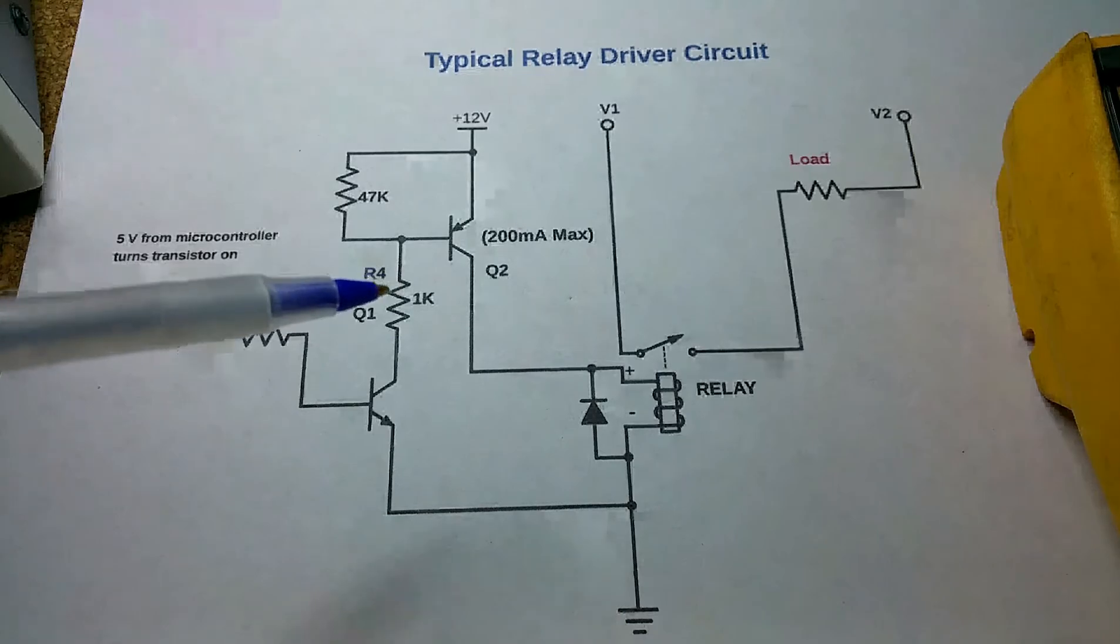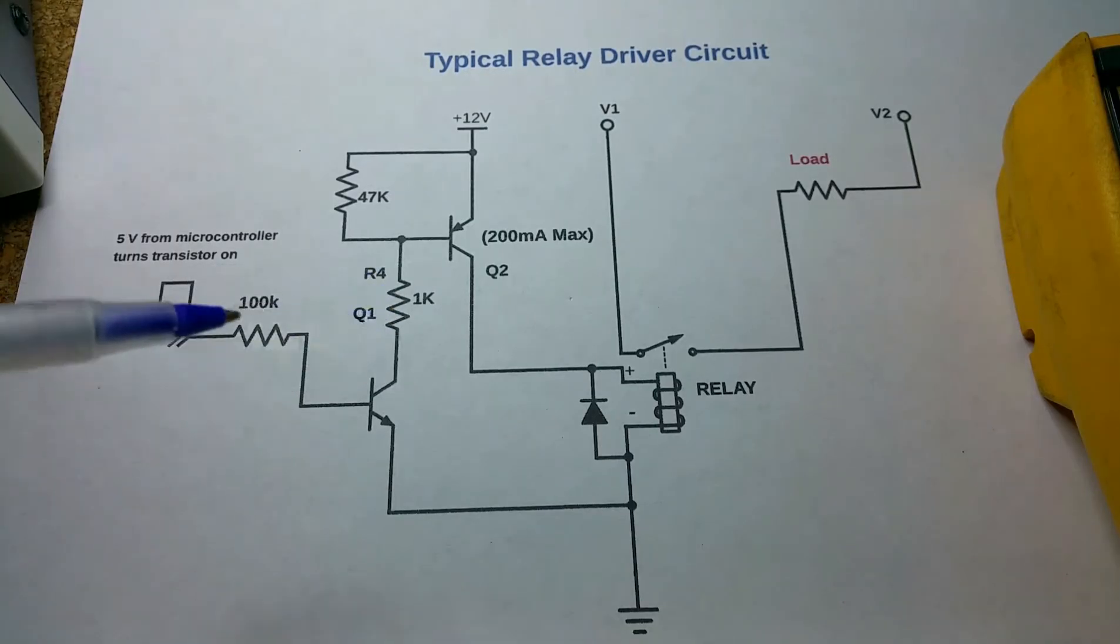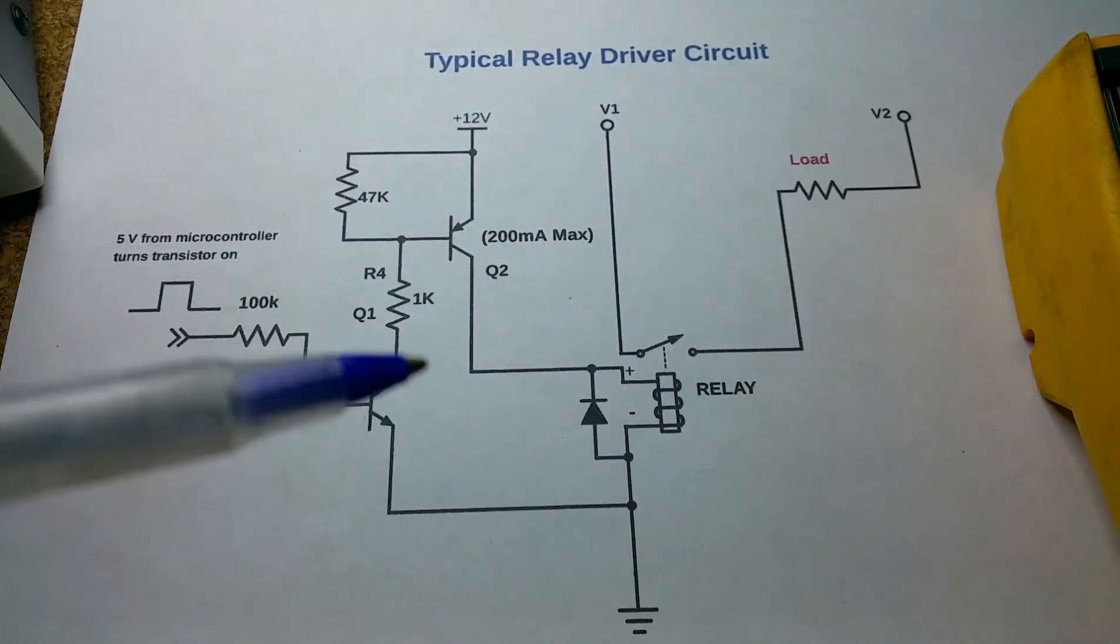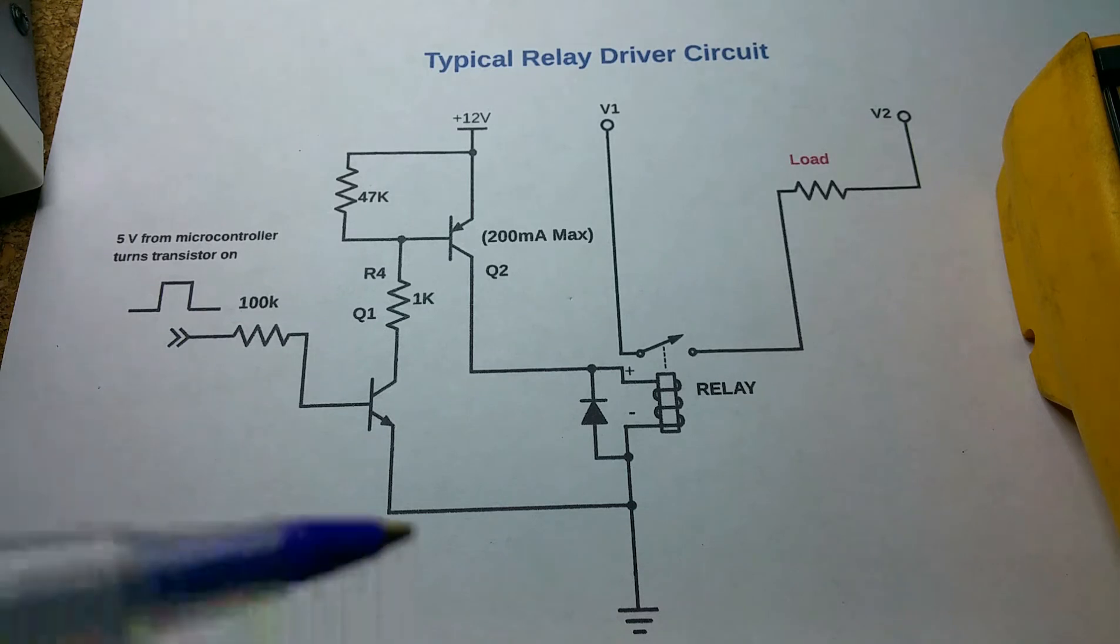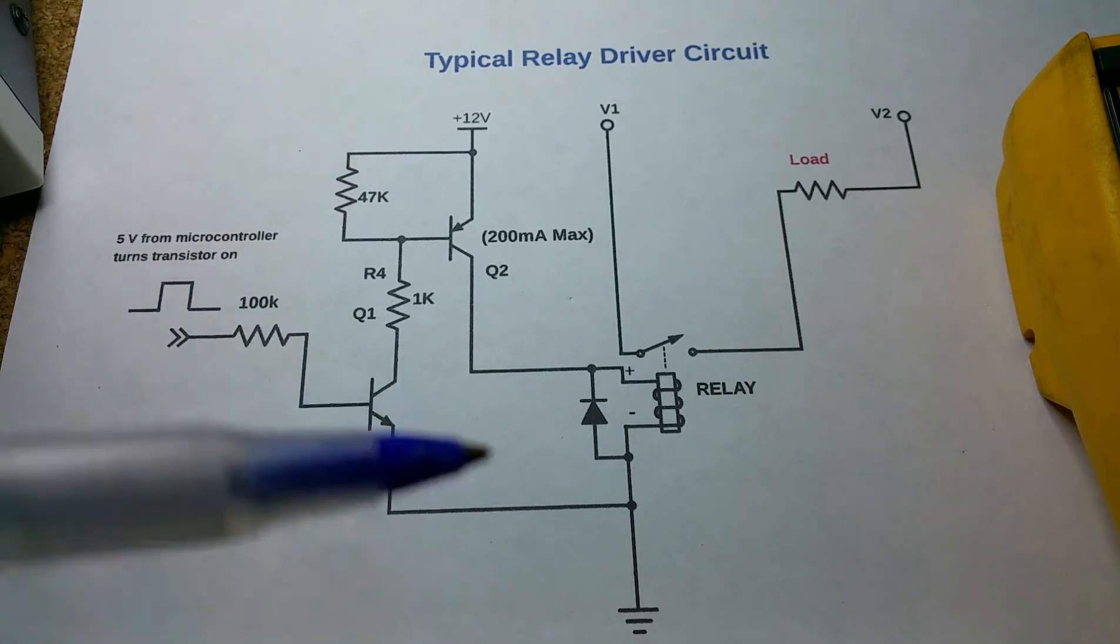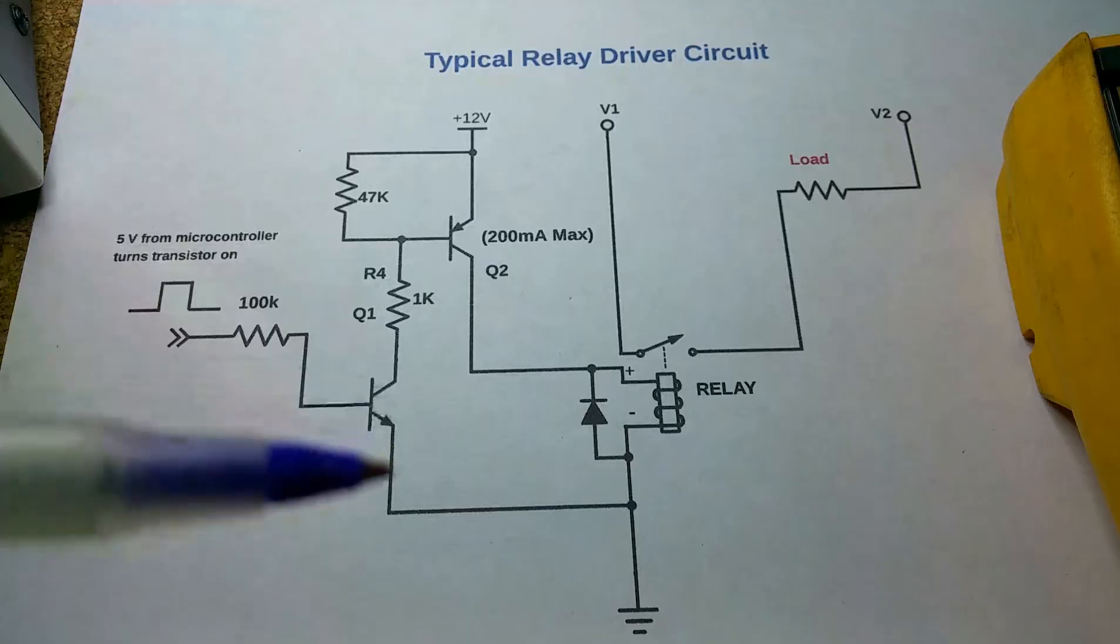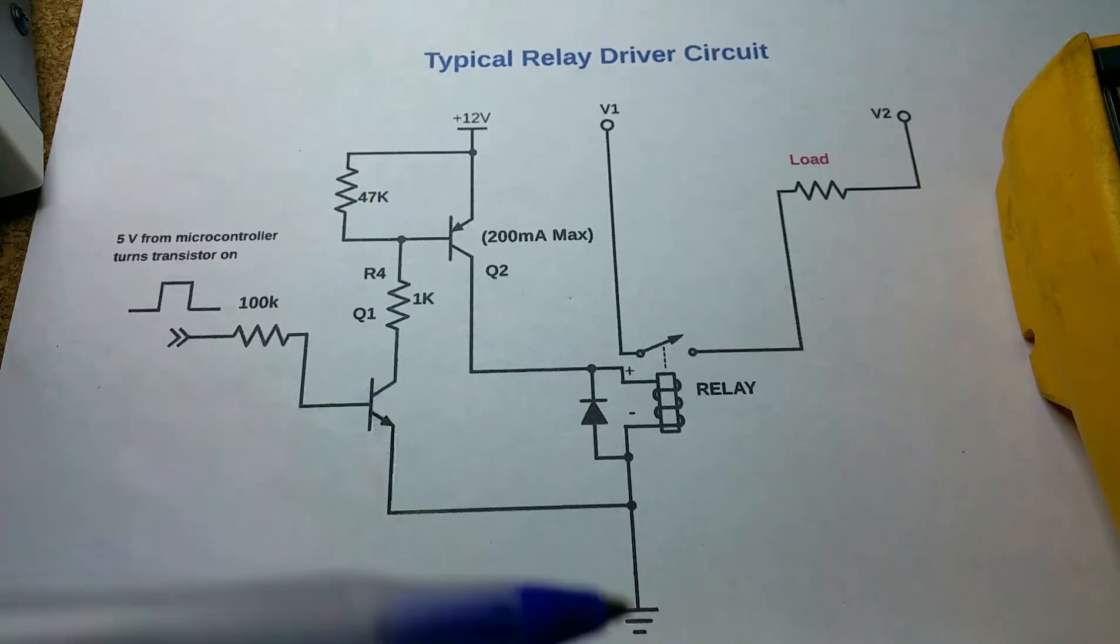But since we have 11.3 volts here you can't connect this directly to the microcontroller in most cases. Most microcontrollers aren't capable of dealing with voltages that high because they are designed to run on only 3.3 or 5 volts, and most of them their outputs can't tolerate this high of a voltage. Some can but most can't. So what we do is you add another driver transistor here which is also a switch, and essentially it turns this on, brings this down to ground, and we get our 11.7 volts there, we get basically zero volts here, and then turns this transistor on, turns the relay on.